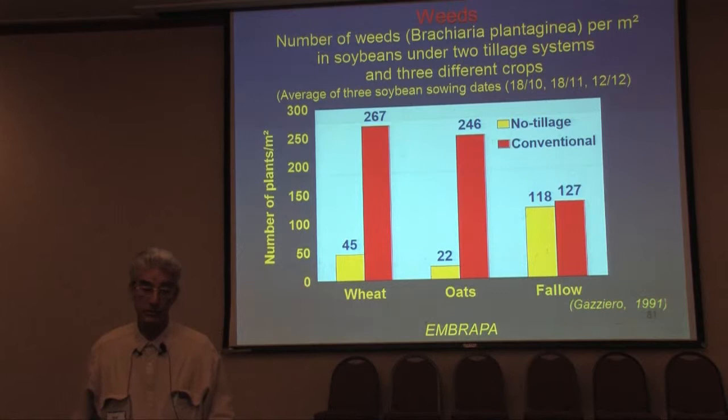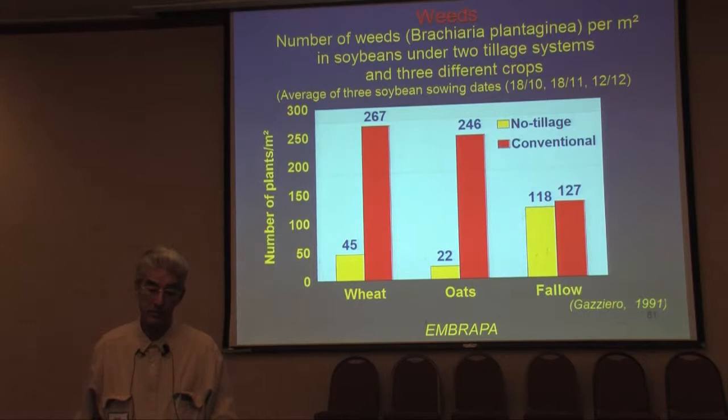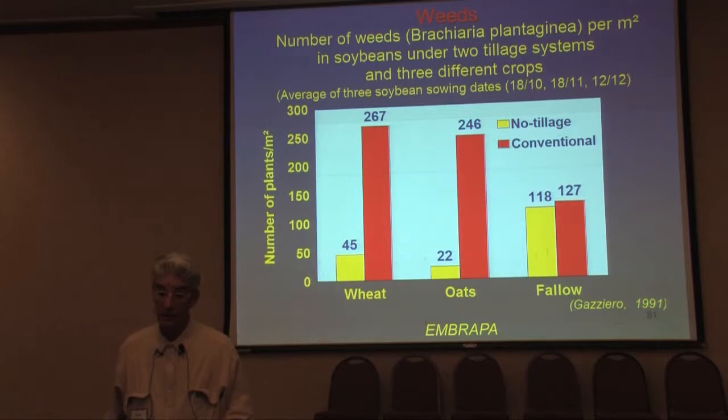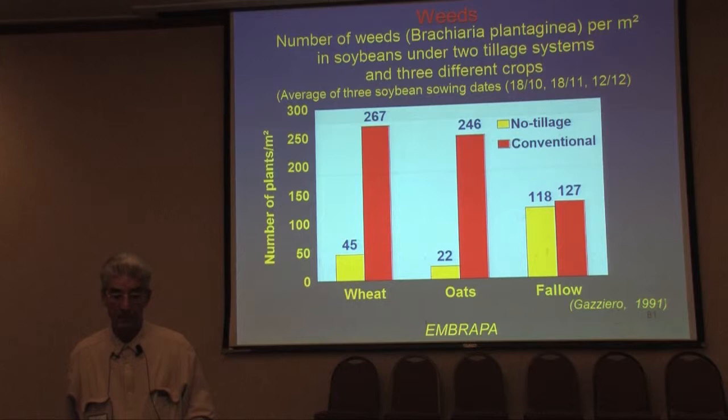This slide shows the number of weeds of a specific weed, Preciaria Plantagenia, per square meter in soybeans under two tillage systems and three different crops. You see that in wheat, there is low infestation in no-tillage and high infestation in conventional tillage. In oats, the same thing — while under fallow they are almost the same, which demonstrates the negative effect of fallow. But this may differ with different weed species.